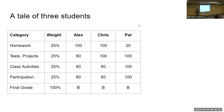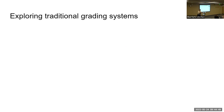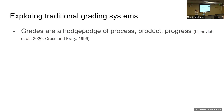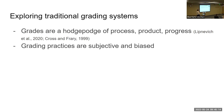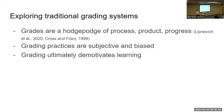Let's dive into traditional grading systems and why they're problematic. When we look at traditional grading systems, we have grades that are a hodgepodge of process, product, and progress — and there are links to the research behind each of these areas. Grading practices are inherently subjective and biased, which is well supported in the literature, and grading ultimately demotivates learning. We'll pick apart each of these pieces over the next few slides.